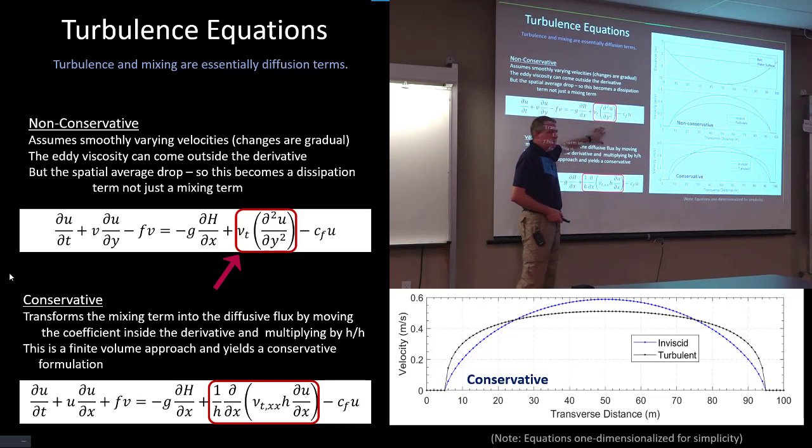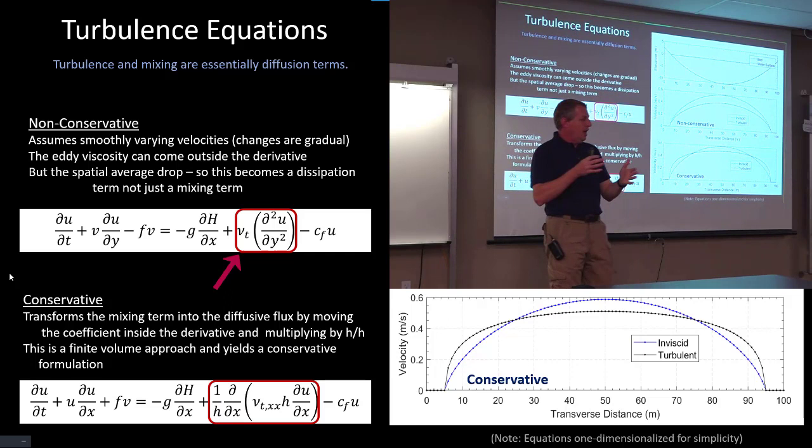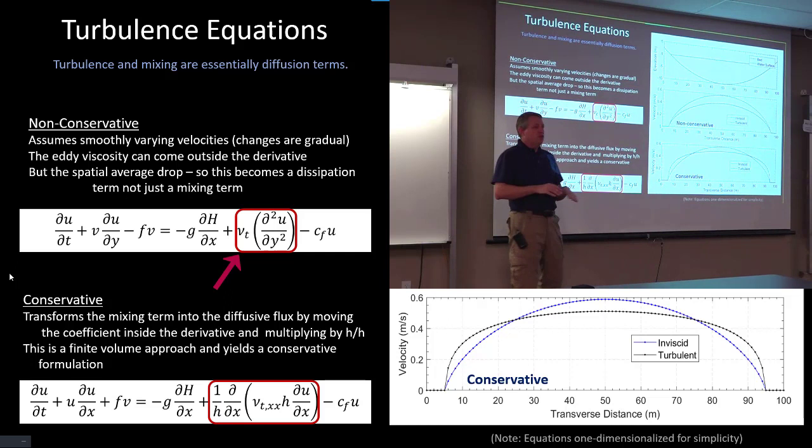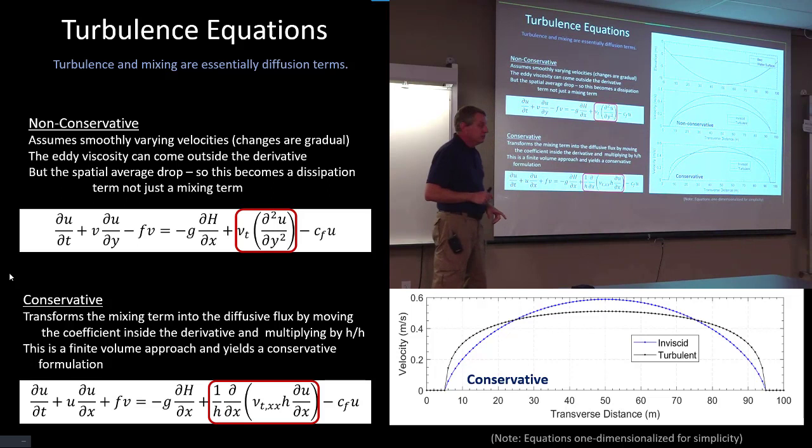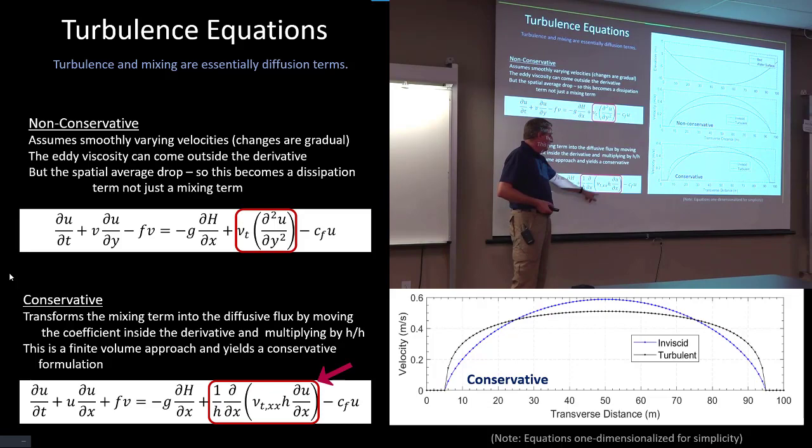This isn't magical. All we're doing is we're conceptualizing turbulence as a diffusion process. But this assumes that the velocities vary smoothly. And so we can pull the eddy viscosity outside of the derivative. The magic that Alex did with the conservative method, and other people have done this before, he embedded the eddy viscosity in the derivative and multiplied by h over h to make it conservative.